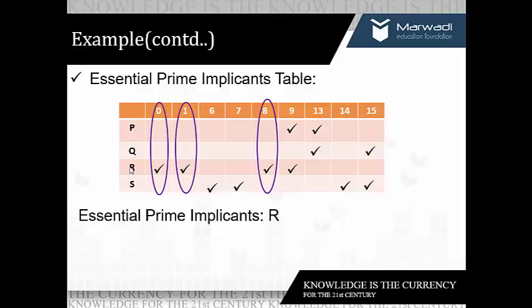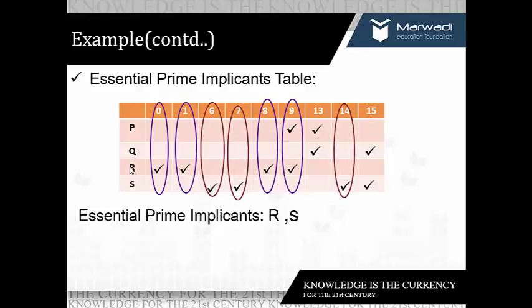By covering R we also cover minterm 9. On further observation we can include S in our list of essential prime implicants, covering minterms 6, 7, 14, and 15. This means it is essential to include both R and S in our final boolean expression in order to cover the given set of minterms.